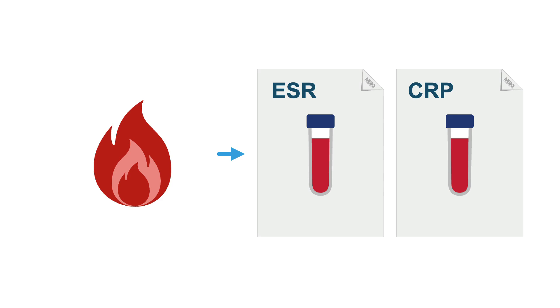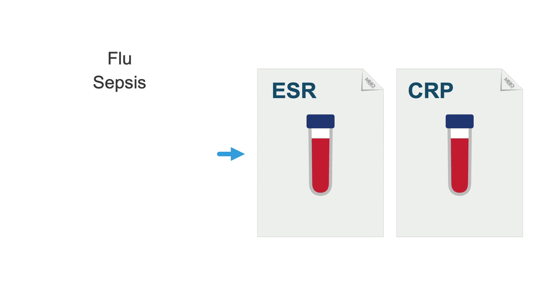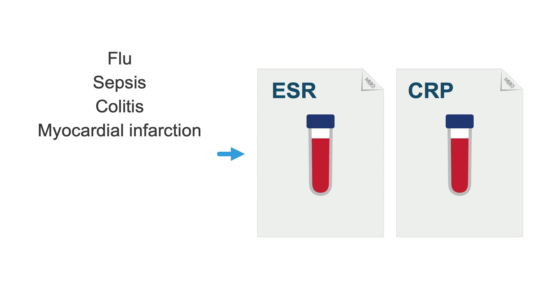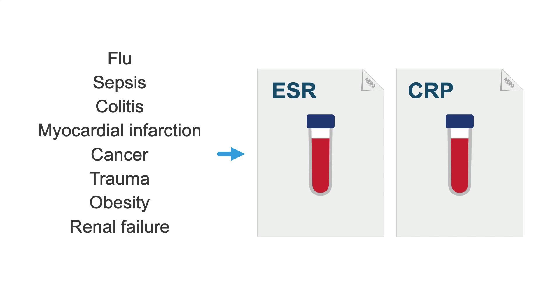Examples that can elevate ESR and CRP include infections like flu, sepsis, colitis, a myocardial infarction, cancer, trauma, or even obesity, renal failure, and pregnancy.